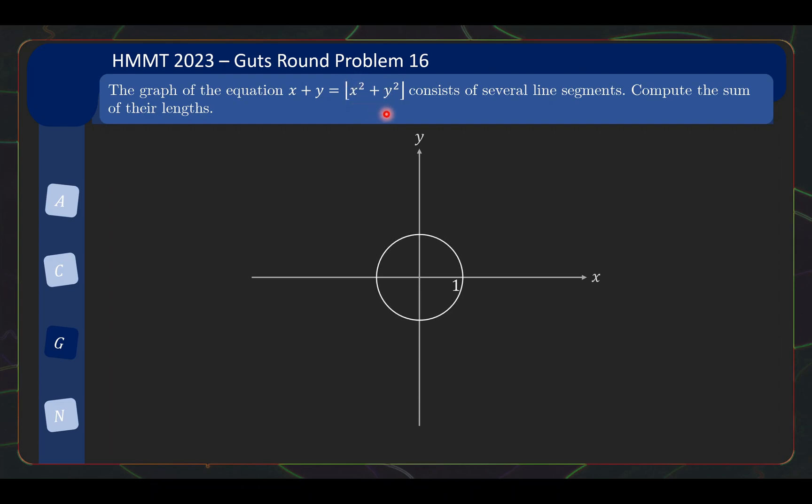So first let us draw the circle of radius one, and all the points inside this circle will have floor of x squared plus y squared evaluate to zero. Then in this case, the graph of this equation will just be the points x plus y equals zero, and the points that lie inside this circle. So as I mentioned, this circle contains points where floor of x squared plus y squared equals zero.